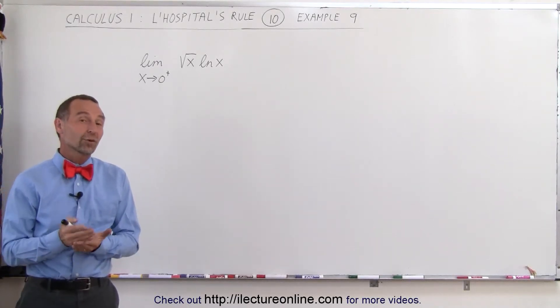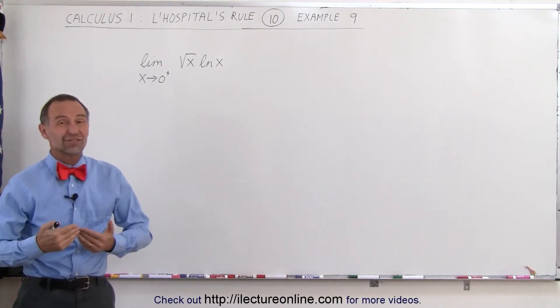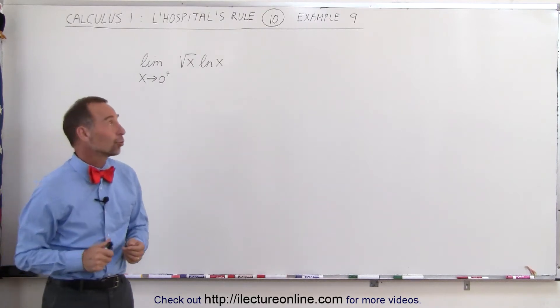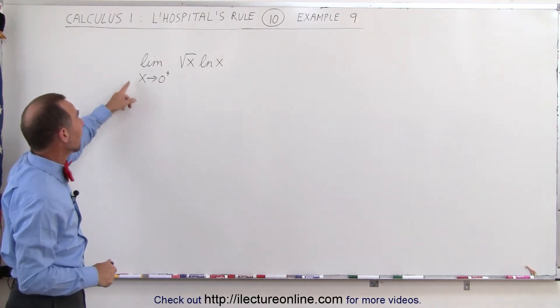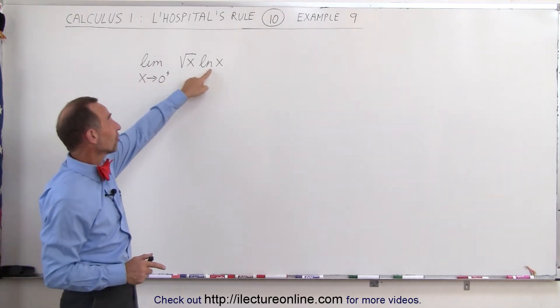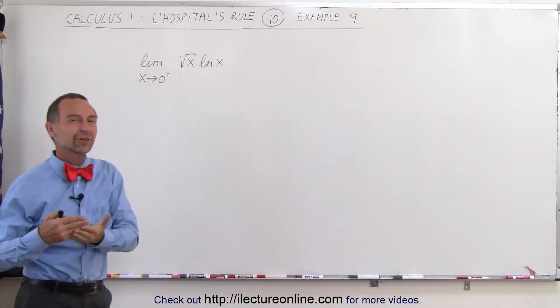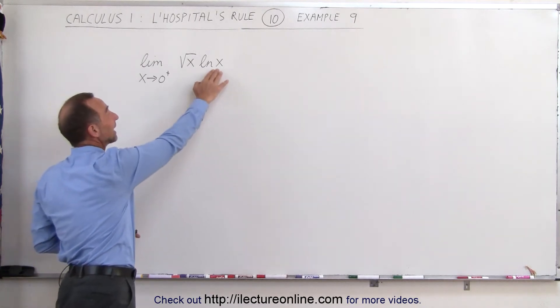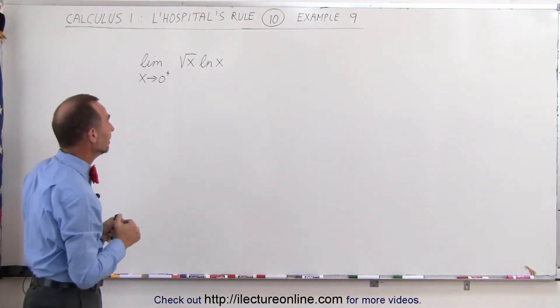Welcome to our lecture online. Once in a while, you get a problem that appears not to be able to be used with L'Hopital's rule. Case in point, taking the limit as x approaches 0 from above, because we have the natural log of x there, and we don't have a defined number when we plug in a negative number for x, so we have to come in from the positive side.